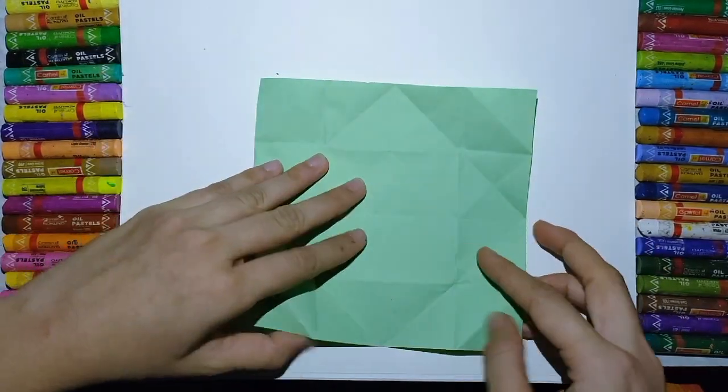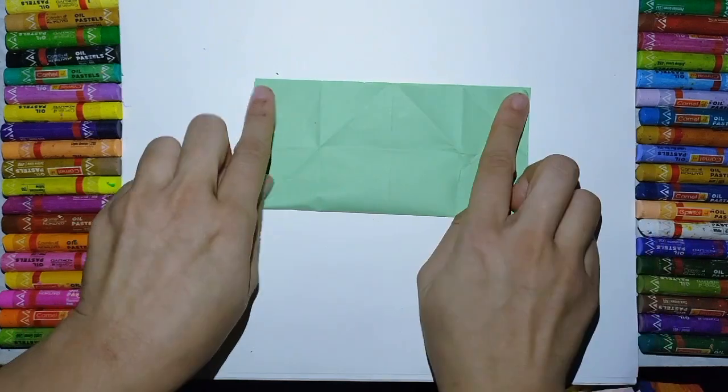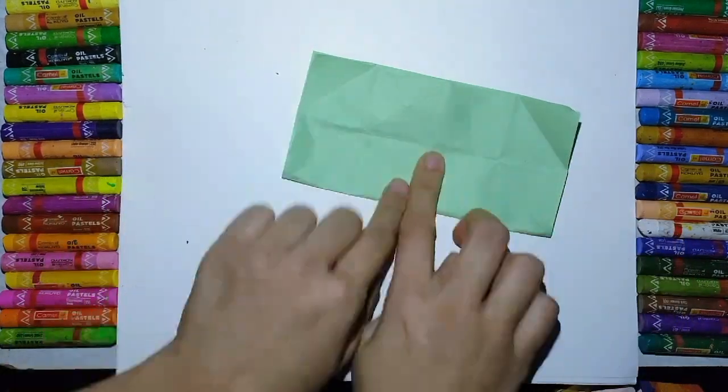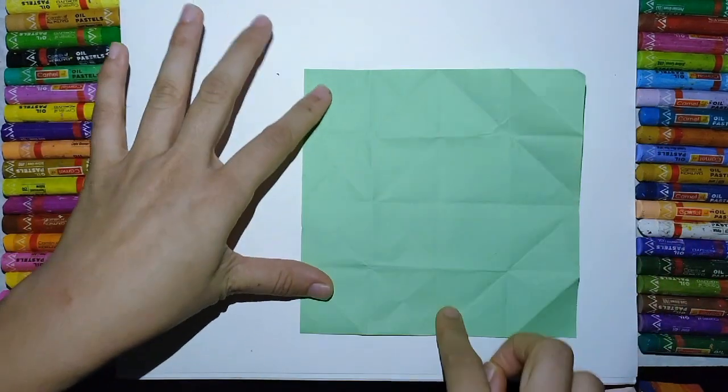This is the paper. Fold the paper like this. Open your paper. Again fold it from the side. So you will get a plus sign here.